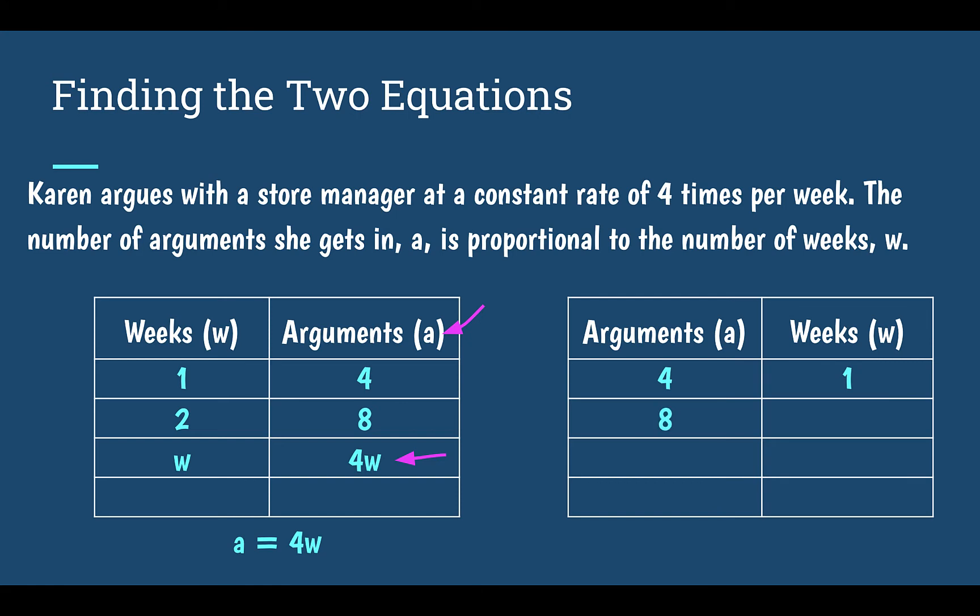Using one fourth now as our constant of proportionality, if Karen had eight arguments, we can multiply that by one fourth, that must mean that it has been two weeks. Just like with the weeks, if I don't know exactly how many arguments, so let's say A, but I want to know how many weeks it's been, this time I just multiply by one fourth. So I would take my arguments times one fourth, and that would tell me how many weeks.